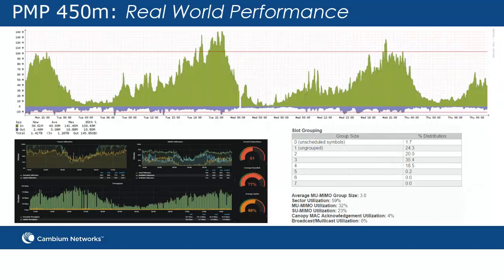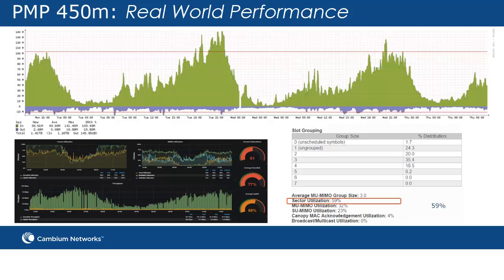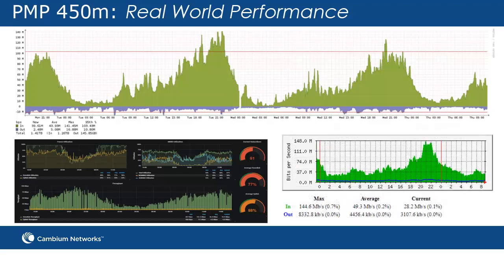Let's start by looking at throughput monitoring in a 20 MHz channel. In this deployment, running up to 150 Mbps in downlink, we still have spare capacity — shown by the sector utilization stats and by the fact that throughput does not flatten off at its maximum value.